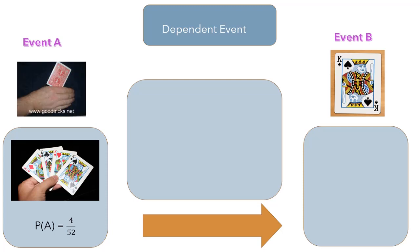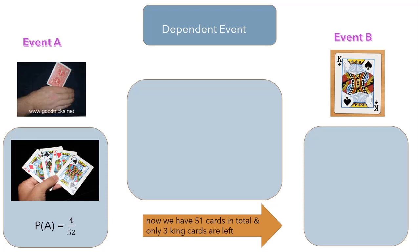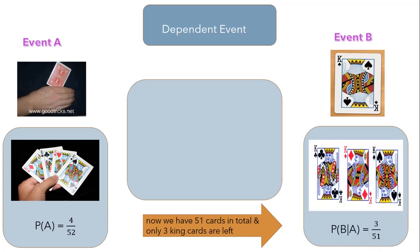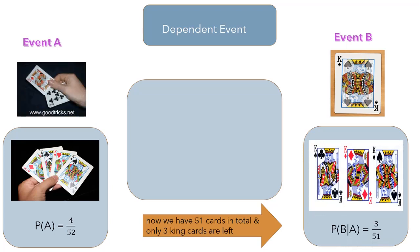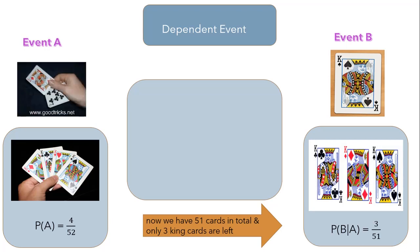So probability of event A will be 4 over 52. After picking up a card, we now have 51 cards in total and we'll draw the second king from the deck. So our probability of event B will be 3 over 51, as only three kings are left after the first card pickup. Event B is depending on event A, meaning the probability will keep changing as we move to further events, since we are finding probabilities from the remaining cards.